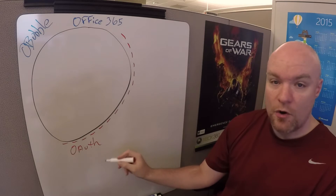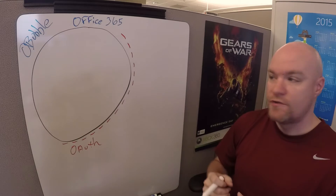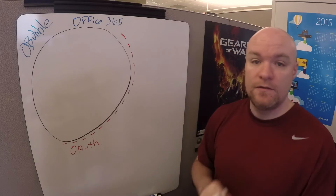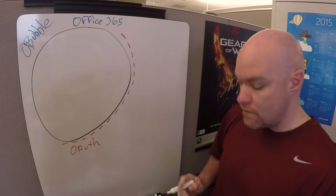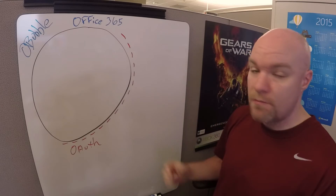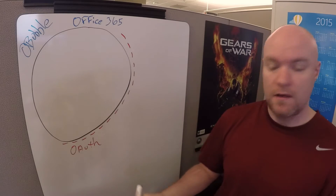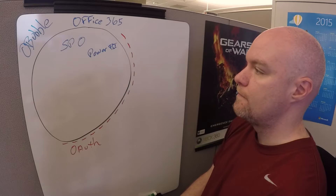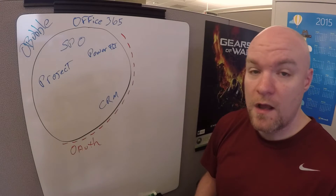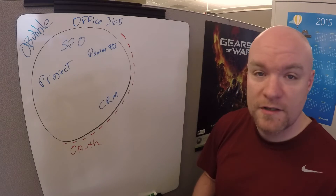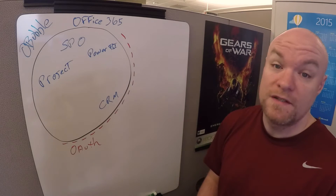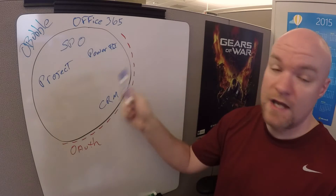We've listed out OAuth — that's the authentication model. Think of this as the organizational account that you use to sign into Office 365. Now we want to put some things inside the bubble, because what's the point of going into the bubble if there's nothing there to get data from? Inside the bubble we've got SharePoint Online, Power BI, Project, CRM — any service that's part of O365 is going to reside in the bubble.